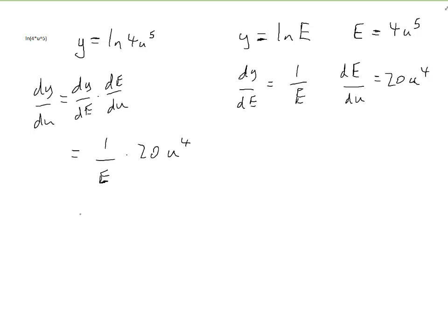So that's 4u⁵. So it's 20u⁴. That's this part. And then E is 4u⁵. Now, you could stop here, but we can simplify this, because the 20 divided by 4 is 5. And then u⁴ divided by u⁵ equals 1/u. So it simplifies right down to this. So that's the example of the chain rule of differentiation done.